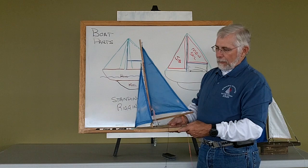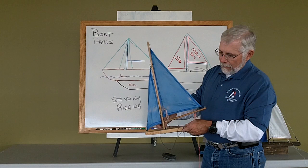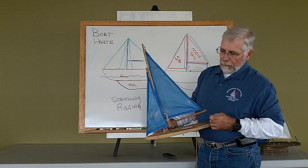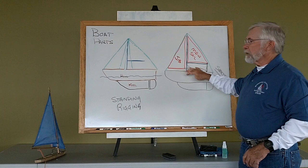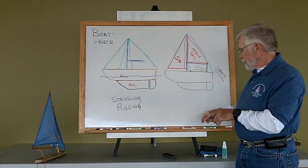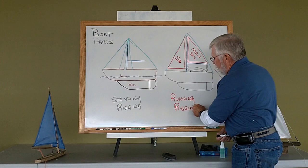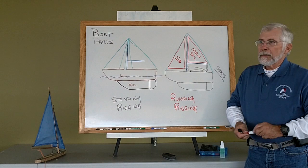And perhaps hard to see, but I also have jib sheets that I can use to control the movement of my jib. The lines that we use to raise the sails and control the sails we refer to as running rigging. So I have standing rigging that's used to hold my mast up and then I have running rigging which is used to control the movement of the sails.